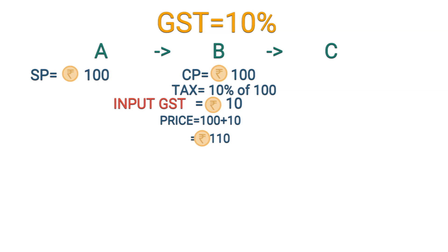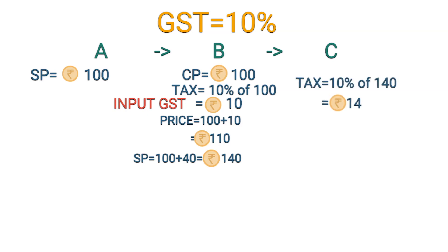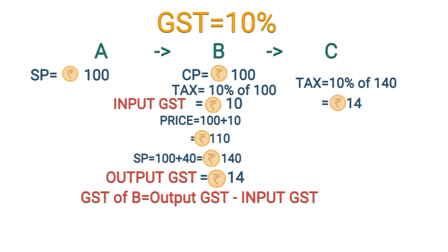When B sells the good to C, he adds his profit to it. Let us say he marks the price higher by Rs.40 and sells it to C for Rs.140. When B sells the article to C, he charges 10% tax. So C has to pay 10% of Rs.140, which is Rs.14, and that is B's Output GST. But from this Output GST of Rs.14, B has already paid Rs.10 to A which has gone to the government. So B has to pay the remaining Rs.14 minus Rs.10, which is Rs.4. Therefore, GST payable by B equals Output GST minus Input GST, which is Rs.4.